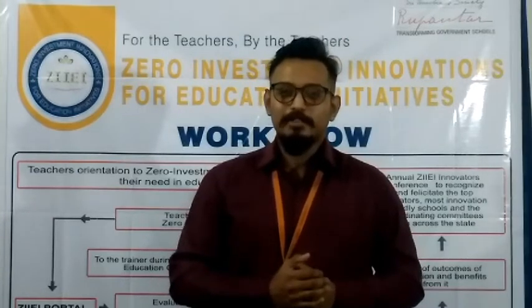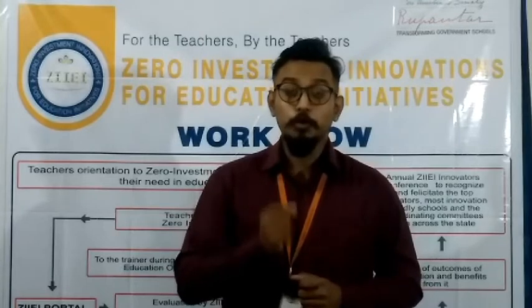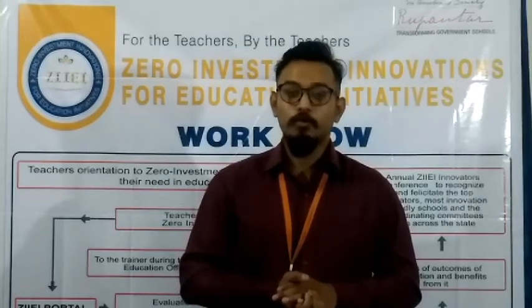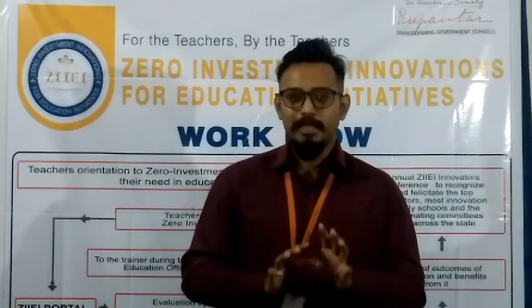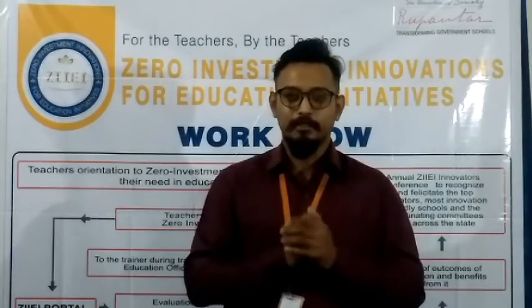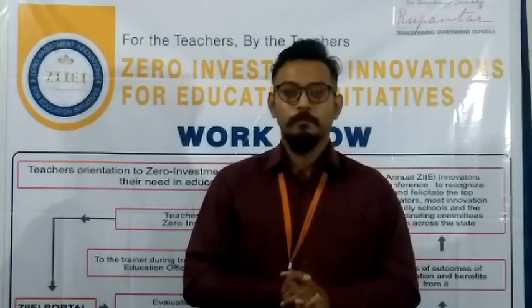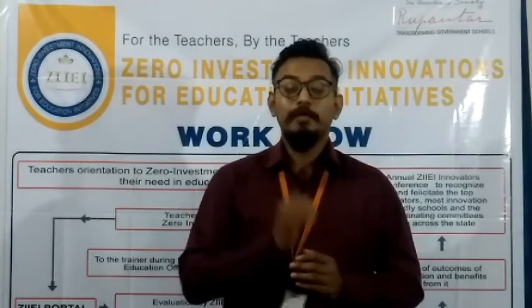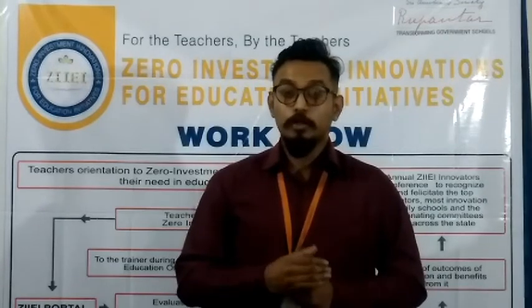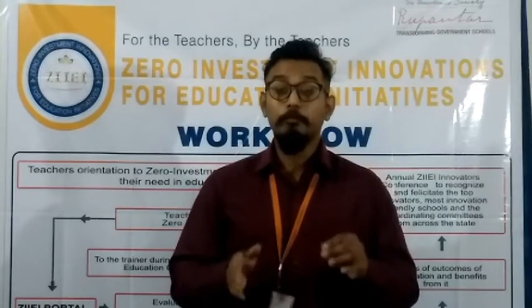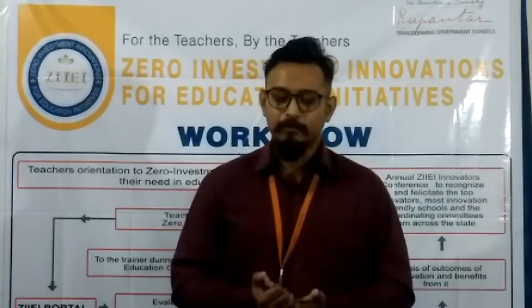We then ask a few questions, like: 'Do you know where Nasruddin was aiming?' They respond: at the target. Then we ask: 'Do you know what a target is?' We take all responses and explain that a target is a thing or place used as an aim for hitting, used in different sports. We then do another activity — we ask the students to take one sheet of paper and make an aeroplane, which also comes under origami activity.